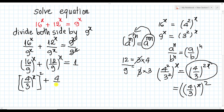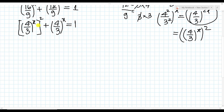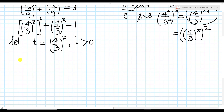Now we have an equation with the same base, so we can let t equal (4/3)^8, where t is a positive number. Then we can write t squared plus t equals 1. Moving 1 to the left side, we get t squared plus t minus 1 equals 0.